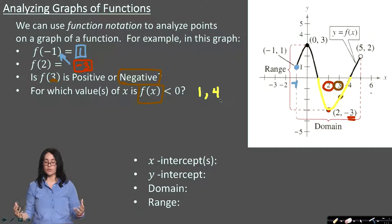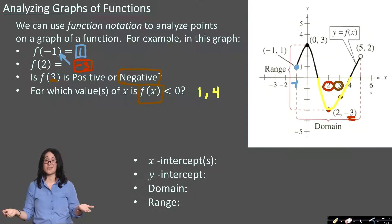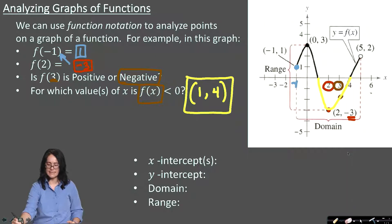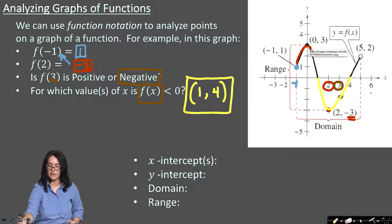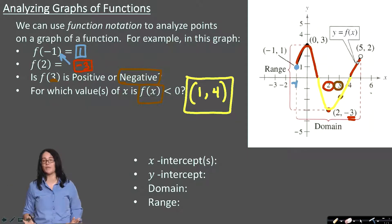Could you write that in interval notation — x-values between 1 and 4? Yes, but do you include 1 and 4 or not? Since it says strictly below the x-axis, at x equals 1 and x equals 4 the outputs are on the x-axis, not below it. So we use parentheses: (1, 4), not including 1 or 4. If I had asked where outputs are greater than 0, that would be two separate regions: between x equals negative 1 and x equals 1, and to the right of 4 but less than 5 — two regions joined by a union symbol.